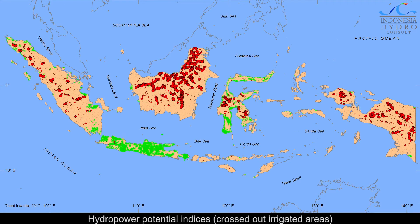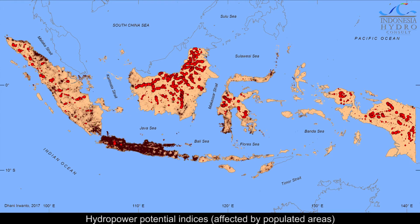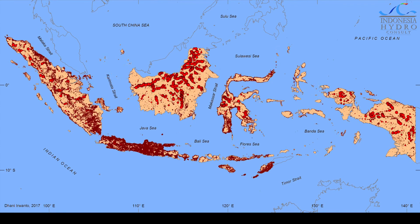There are irrigated areas around the potential sites, as indicated by the green regions on this map. Those areas normally divert water from the streams so that the flow rates available for hydropower are significantly reduced. Populated areas around the potentials may affect the development, causing social and land acquisition problems, as well as deterioration of the drainage basins. Therefore, they must be taken into consideration. Some of the potentials are located at settlement areas, which may pose social, land acquisition, and land price problems, so they must be taken into consideration as well.